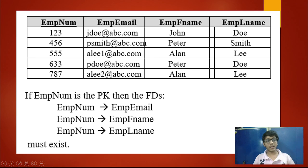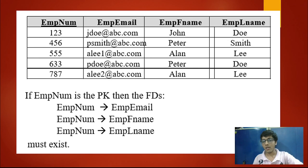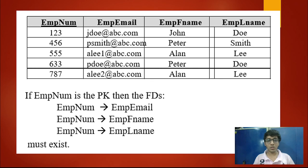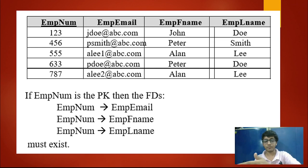If these dependencies don't exist, we say the functional dependency is not correct. Employee email cannot be used as a functional dependency because it can be null — it's not a primary key. But we can use employee number to determine the other fields because, as the primary key, its values can never be null, so we can effectively use them to determine the other field values.